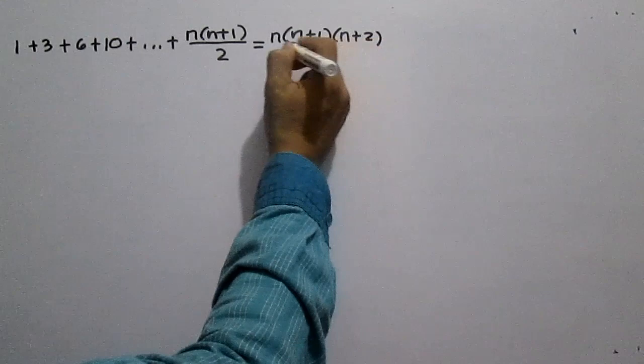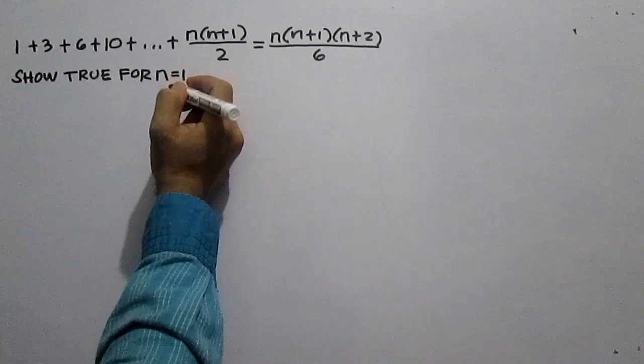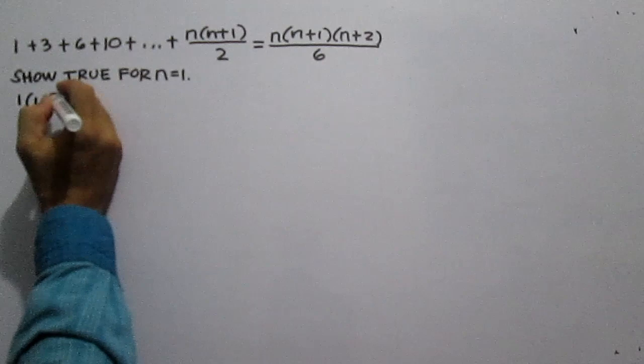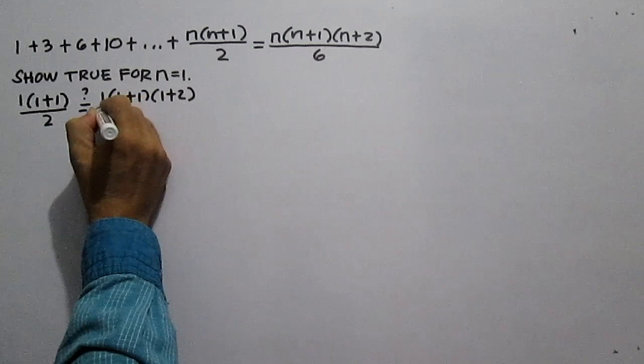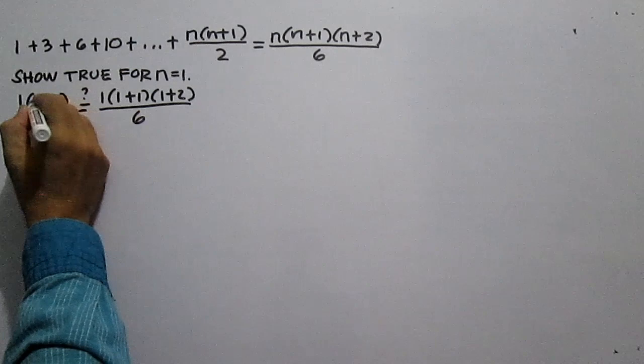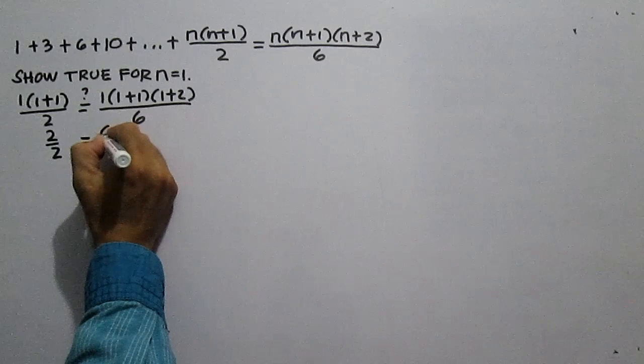Show that the statement is true for n equals 1. Substitute 1 for n: 1 times the quantity 1 plus 1, all over 2, equals 1 times the quantity 1 plus 1 times the quantity 1 plus 2, all over 6. This gives 2 over 2 equals 2 times 3, which is 6, all over 6. So 1 equals 1. True.